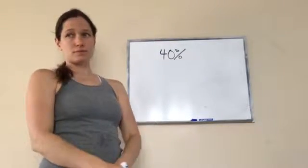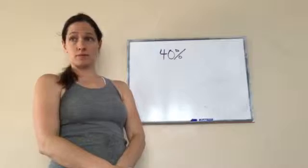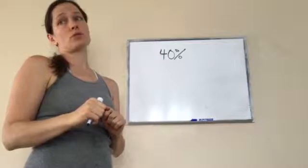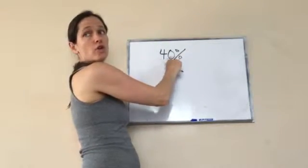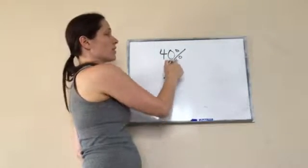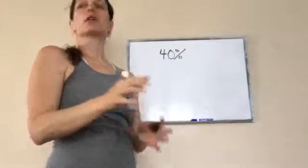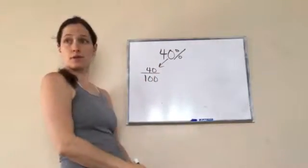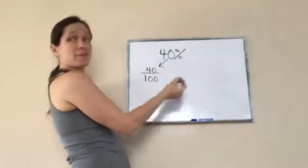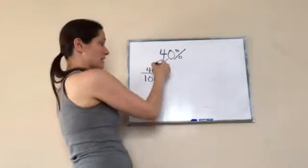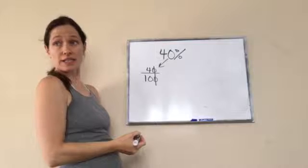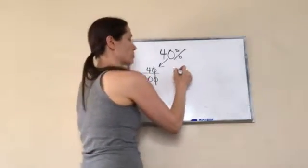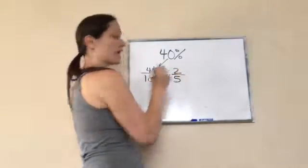As a fraction, that would be 4 over 10. Well, yes, but what is it first before you reduce? What is all percents? Over 100. So, 40 over 100 is 40%. But then when you reduce, if I divide by 10, it basically crosses out the zeros. Then 2 will go into both of them. 2 will go into 4 twice, 2 will go into 10 five times. Final answer, 2 fifths.